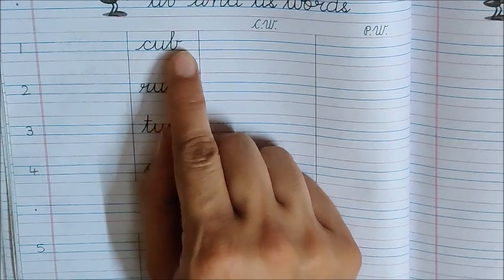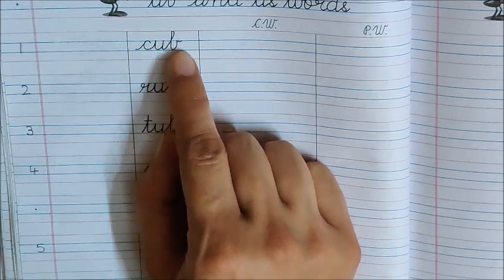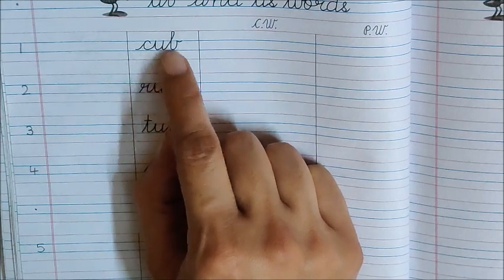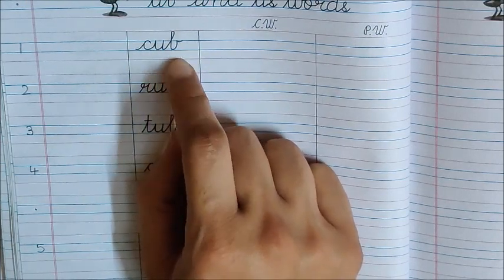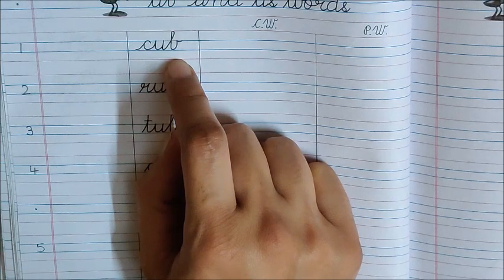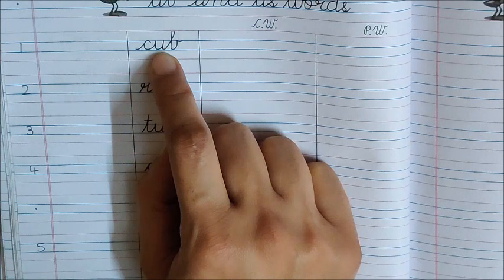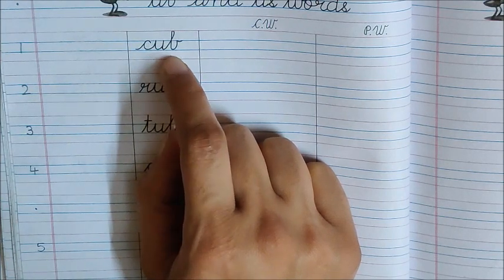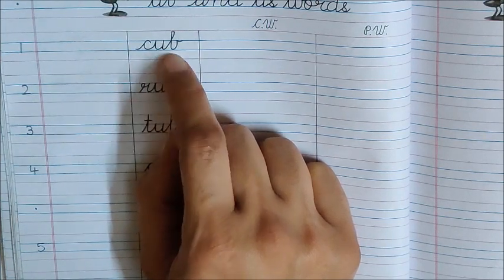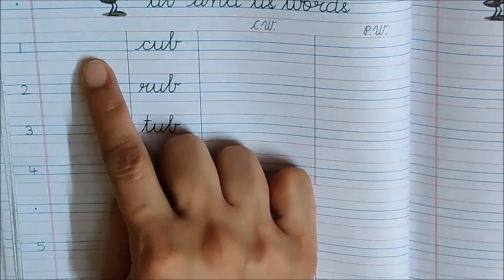Now children, read the first word with your pointer finger. What is a cub, children? Young one of a lion is called cub. Young one means baby. Young one of a lion is called cub, and even young one of a tiger is called cub. Now children, draw here cub with me.